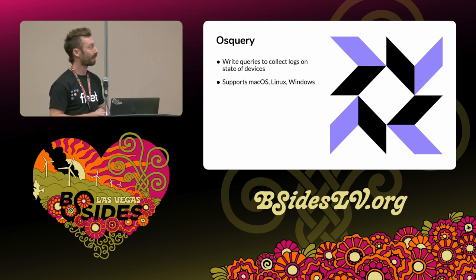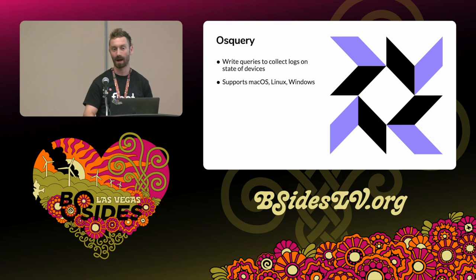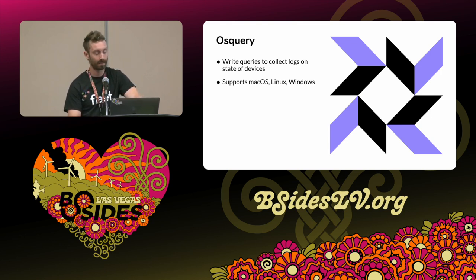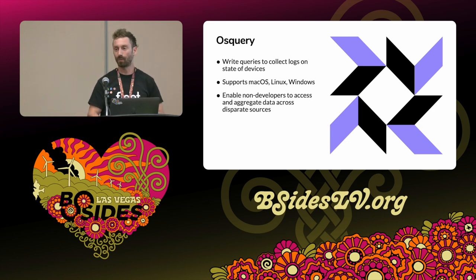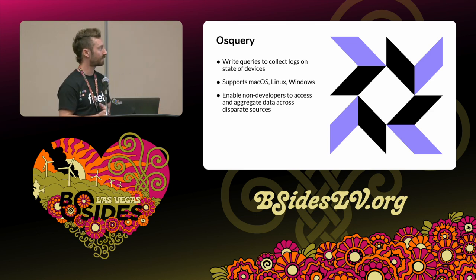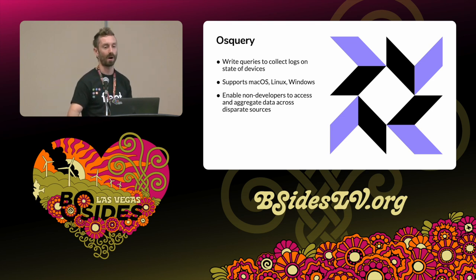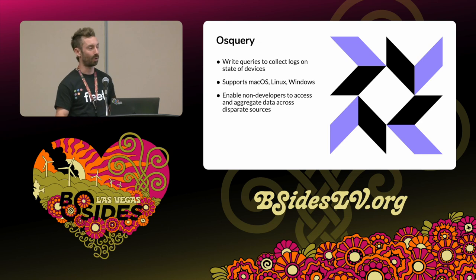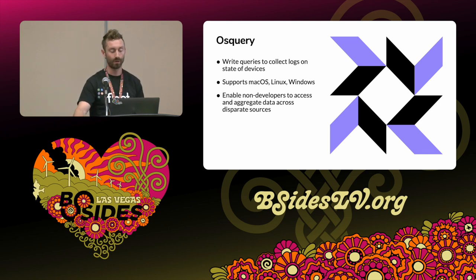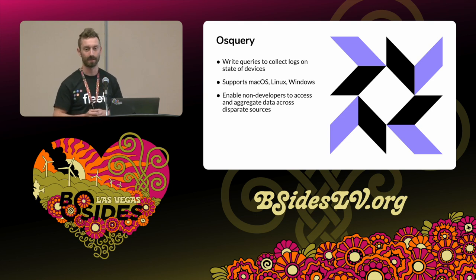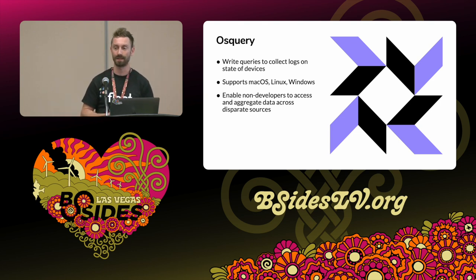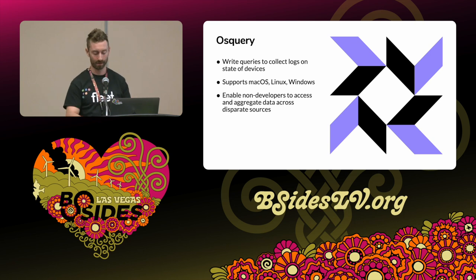I'll talk briefly about how there's some Chrome OS support coming through other work that we've done, not directly in OS Query. While we talked about detection as code and configuration as code, I really do think that this allows non-developers to access and aggregate data across all the different sources on these different operating systems. You don't have to write a whole program to get at a new data source. You can use one of the many data sources already built into OS Query and just learn a little bit of syntax and configuration to start collecting logs across all the different disparate data sources.